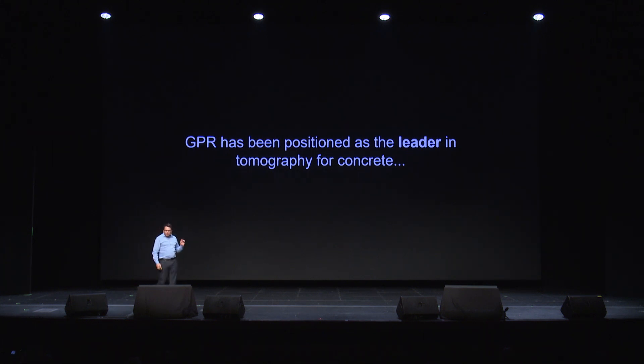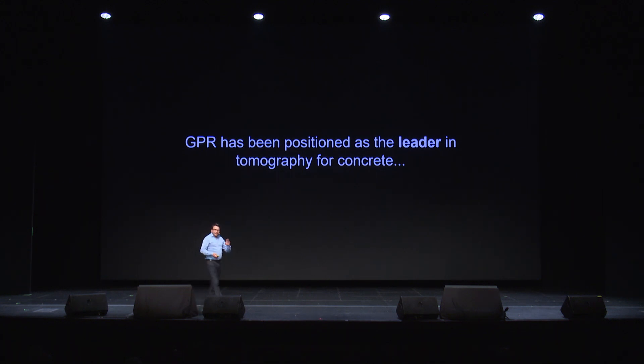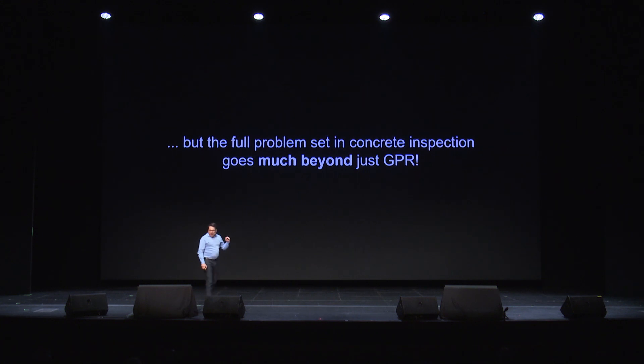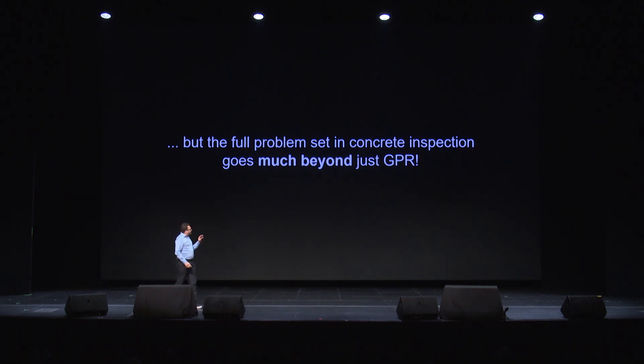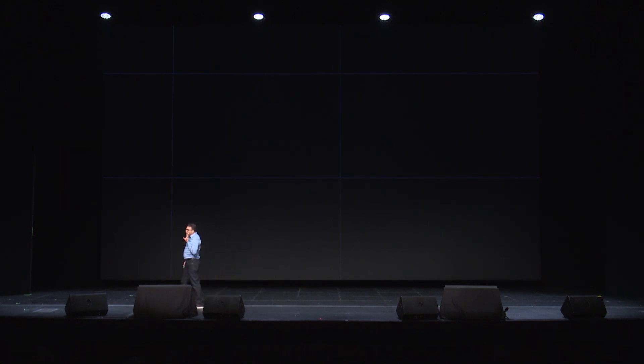GPR has been positioned as the leader in tomography for concrete. But the full problem set in concrete inspection goes much beyond just GPR. The two most popular methods for identifying flaws and objects in concrete are ultrasonic pulse echo and GPR. There are two situations to analyze: the presence of steel in concrete, and the presence of air in concrete.